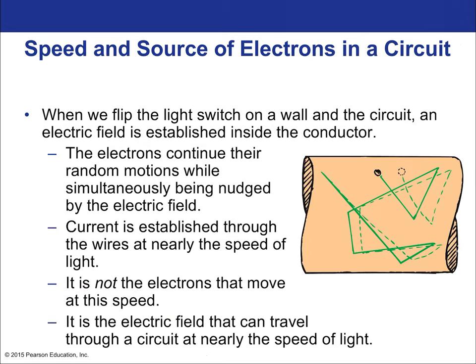When you flip the light switch on a wall, an electrical field is established inside the conductor — the establishment of the electric field moves at the speed of light. But the electrons don't: they continue their random motion while simultaneously being nudged by the electric field. The electric field makes them go in one direction, but electrons actually move in the opposite direction of the field, because the field is defined for the direction a positive charge would experience a force. The current is established through the wires at nearly the speed of light, but the electrons themselves move at just centimeters per second.